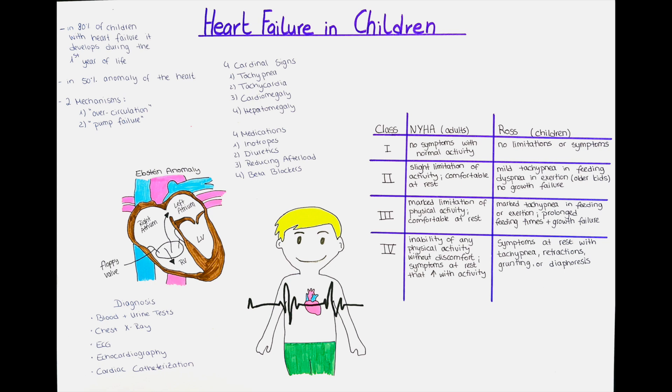There are four cardinal signs which are tachypnea — faster breathing than normally — tachycardia — a faster heartbeat than normally — cardiomegaly, and hepatomegaly. Some patients may additionally also present with poor weight gain, fatigue when exercising, or in the case of a very young child, fatigue when feeding, and also sweating.